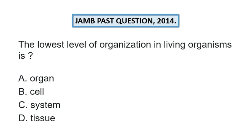Hello guys, welcome to today's dose on biology past questions. Today our question is chosen from year 2014 and it states: 'The lowest level of organization in living organisms is: A) organ, B) cell, C) system, D) tissue.'